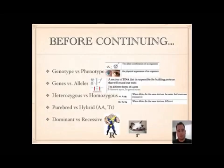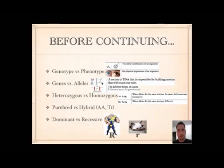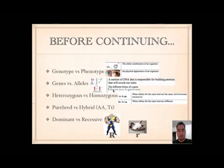Here are a couple of key terms. Genotype versus phenotype: the genotype is the allele combination of an organism — the letter combination. Phenotype is the physical appearance of an organism. Genes are sections of DNA that contain instructions to build a protein that will reveal our traits. Alleles are the different forms of a gene. So if the gene is eye color, the alleles would be brown eyes and green eyes.